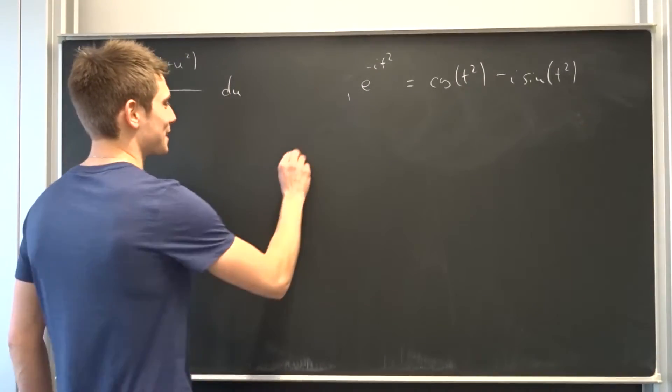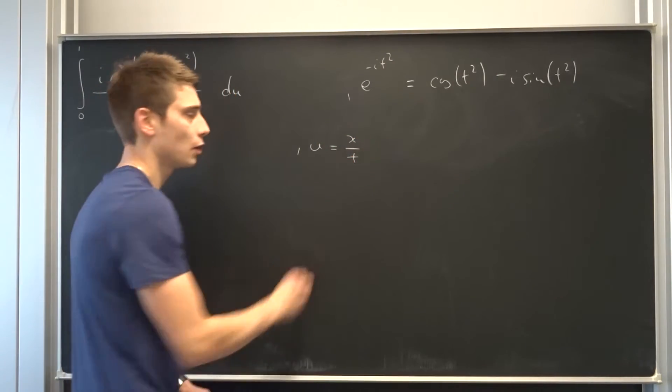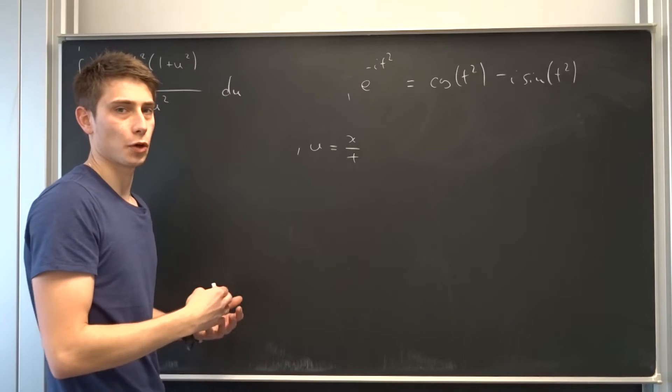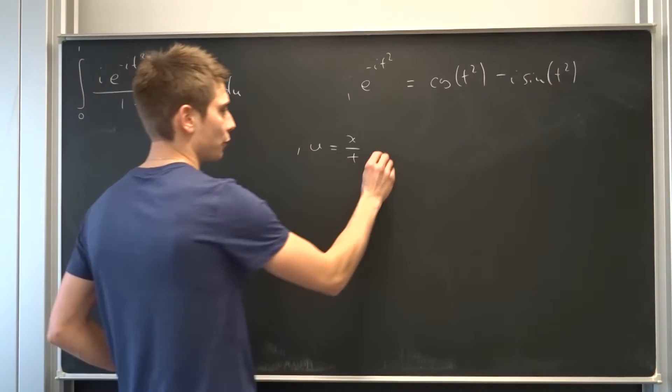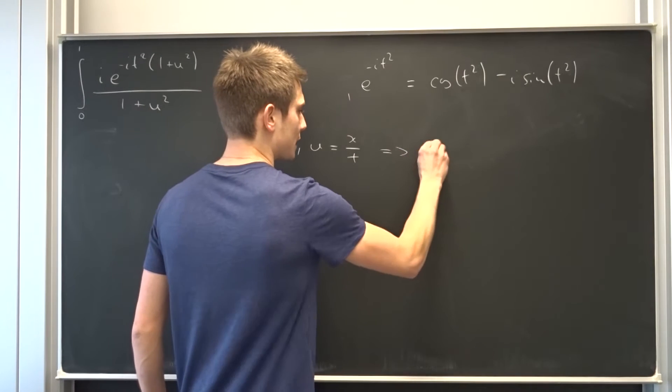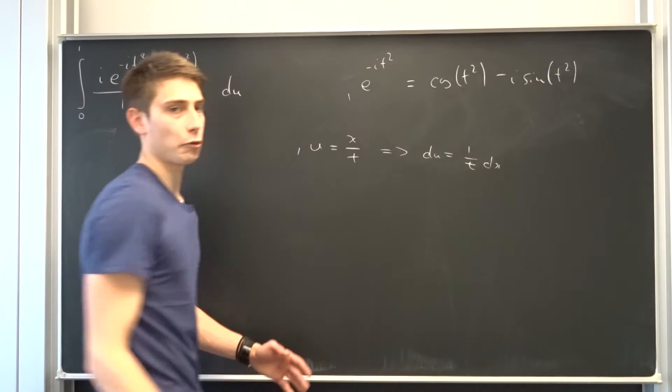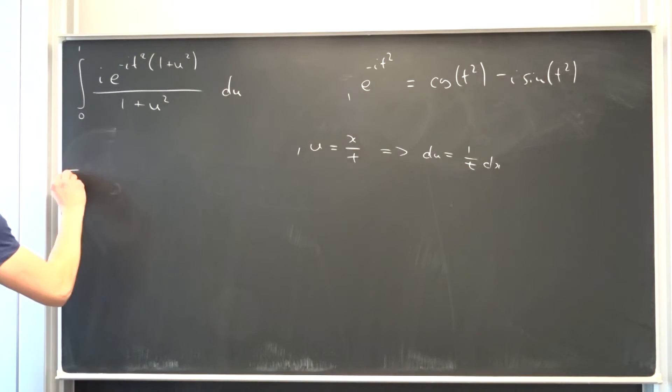So what you should do instead is you let u equal to x over t, so we are substituting back what we substituted in the first place. So u equals x over t, so that would mean that du equals 1 over t times dx, and we can plug all of this new information in.